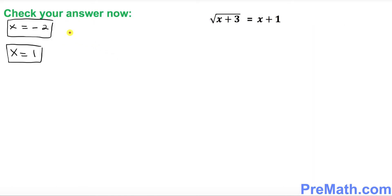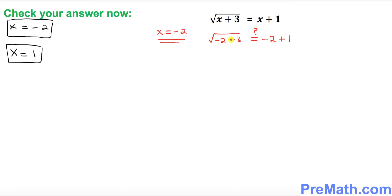Now we're going to check our answers for any extraneous solutions. We have two solutions: negative 2 and 1. Let's check x equals negative 2 first — plug it in wherever you see x. On the left hand side: square root of (negative 2 plus 3) equals negative 2 plus 1. That gives square root of 1 equals negative 1, which simplifies to 1 equals negative 1. The two sides are not equal.